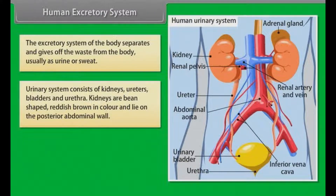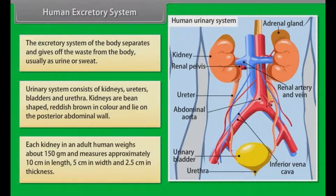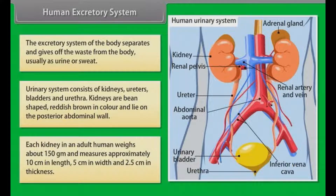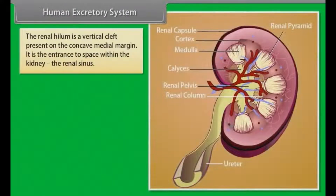Kidneys are bean-shaped, reddish-brown in colour and lie on the posterior abdominal wall. Each kidney in an adult human weighs about 150 grams and measures approximately 10 cm in length, 5 cm in width and 2.5 cm in thickness. The renal hilum is a vertical cleft present on the concave medial margin. It is the entrance to the space within the kidney called the renal sinus.